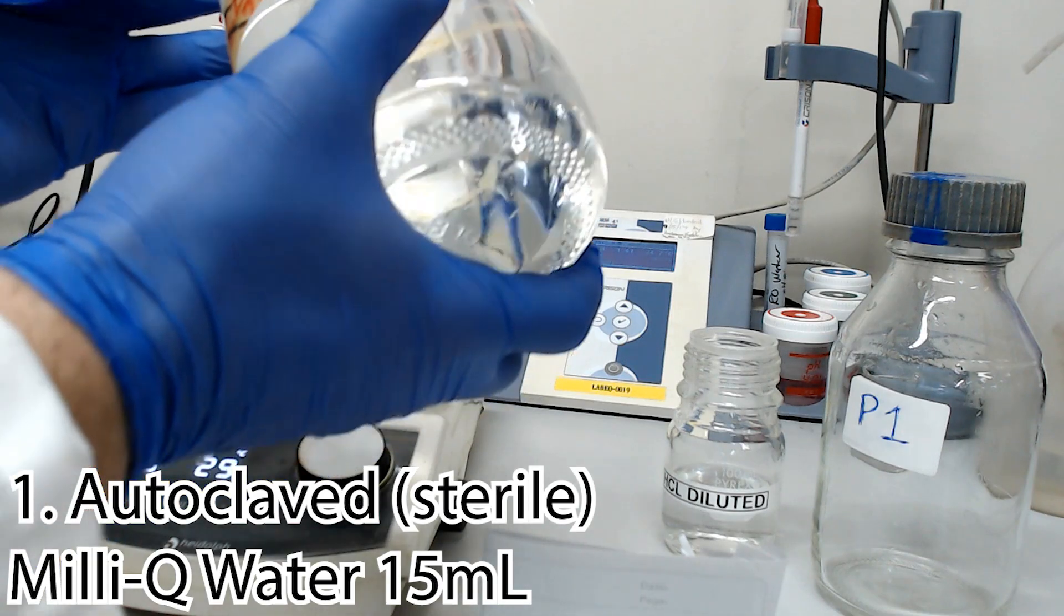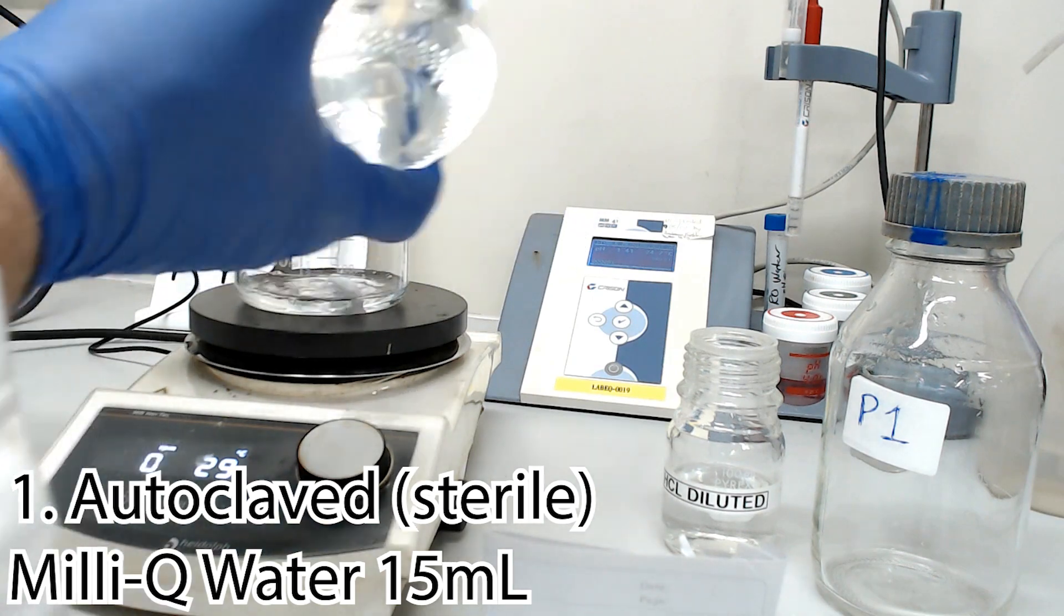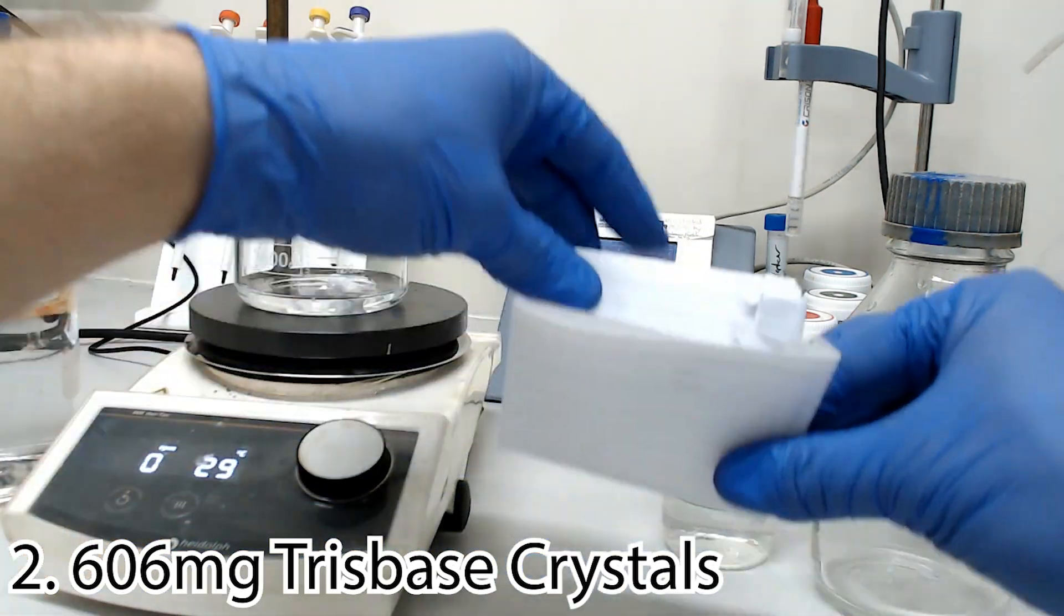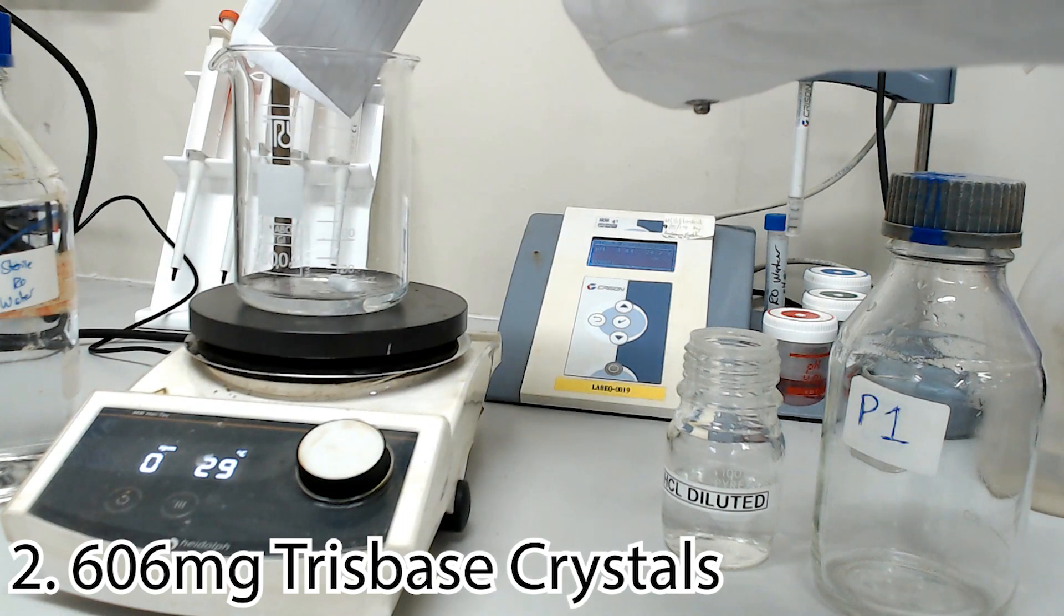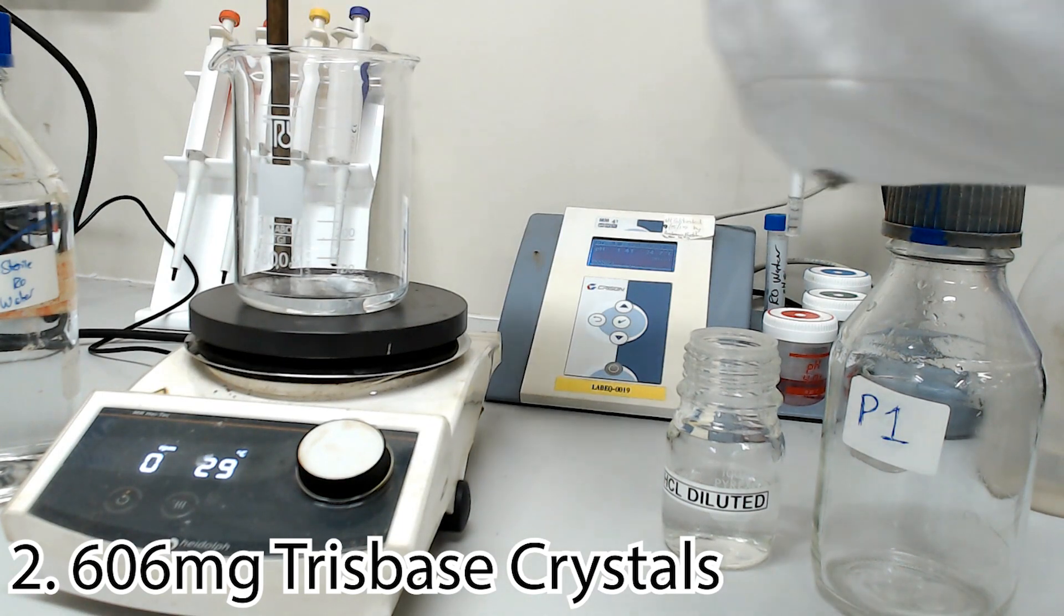So we're going to start with 15 mils of autoclaved MilliQ water in a large clean beaker. Into this, we will drop 606 milligrams of Tris base crystals and then gently mix to allow them to dissolve.